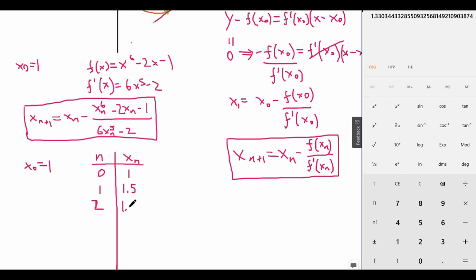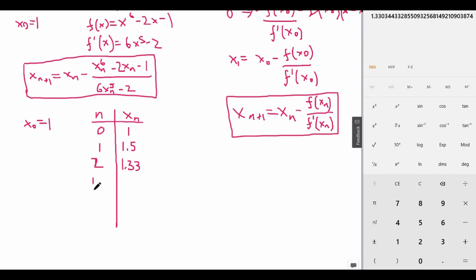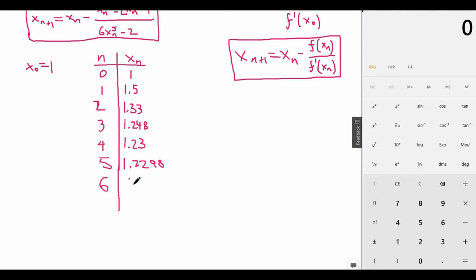So let's write that down. x_2 would equal 1.33. So now we continue the process and go to the next value. When x_n equals 3, we plug in 1.3303. And after that we get 1.248. And now for the next value, we get 1.23. And then 1.2298. And so on and so forth.